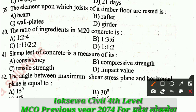Question number 39: The element upon which joists of a timber floor are rested is: A - beam, B - rafter, C - wall plates, D - gutter. The correct answer is beam. The element upon which joists of a timber floor are rested is the beam.